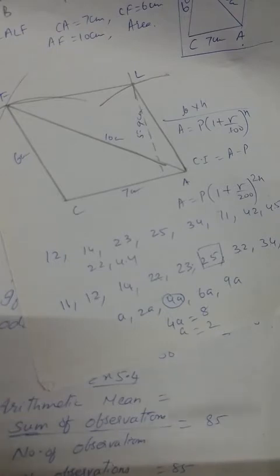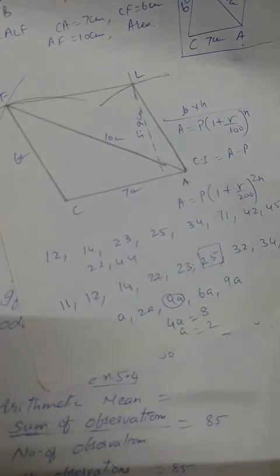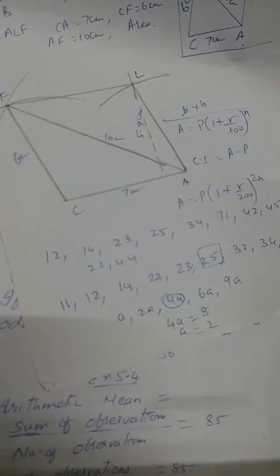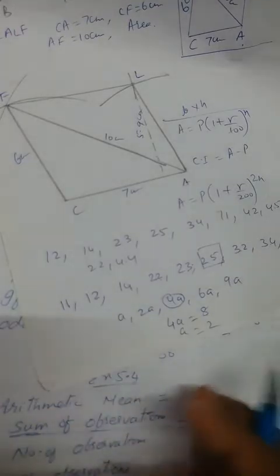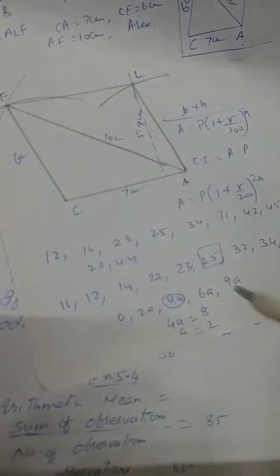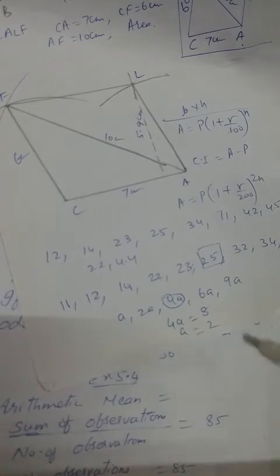The sixth one — the median of the data 24, 29, 34, 38, 35, and 30. First arrange it, then find the middle value. There are 6 observations — even number — so 2 answers come. Find the mean of both answers. Your answer will be 32, which is the fourth option.